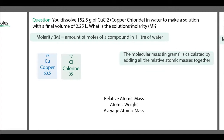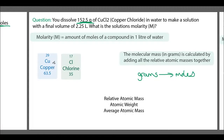In this question they give you an amount in grams, not in moles. So we have to convert the amount in grams into moles. To do that, the first thing we do is look up copper and chlorine in the periodic table, because we've got copper chloride here.